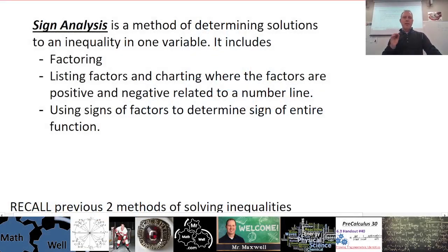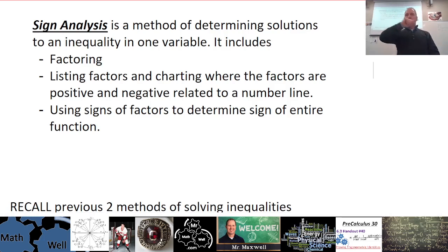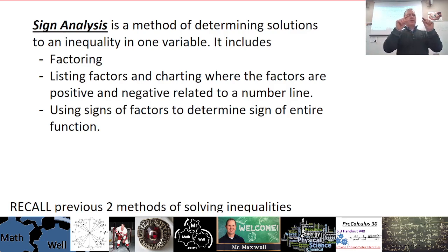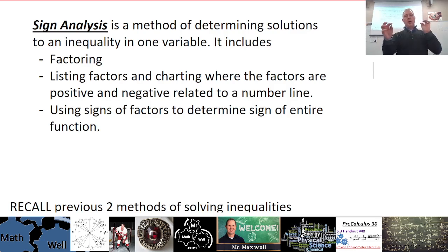Sign analysis is a method of determining solutions to an inequality in one variable. We've talked about other methods before, like graphing the line and determining where the function is positive — where the function is greater than zero, and what x values are associated with that. We've also done it by factoring a polynomial and using those factors to find the x-intercepts, then splitting the number line up into sections where we test points to see if the inequality is true or not.